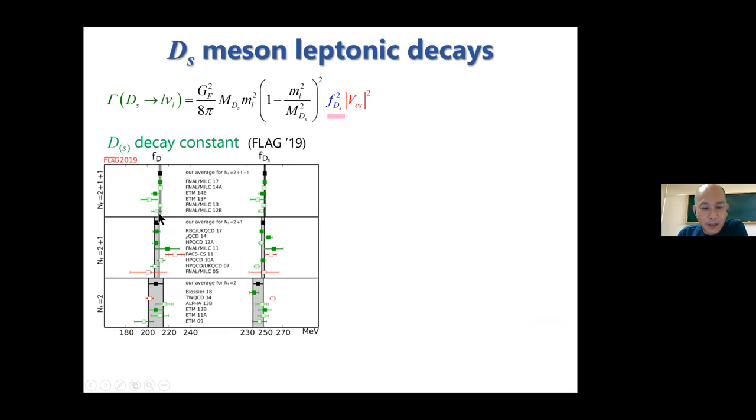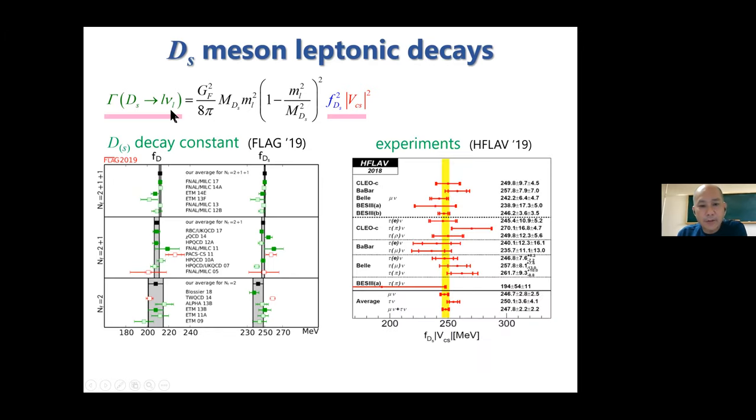You can see that many groups have calculated this decay constant and give consistent results. This decay can be experimentally measured by BES III, CLEO-c, and BaBar. This experimental result is combined with the prediction for the decay constant times the CKM element.